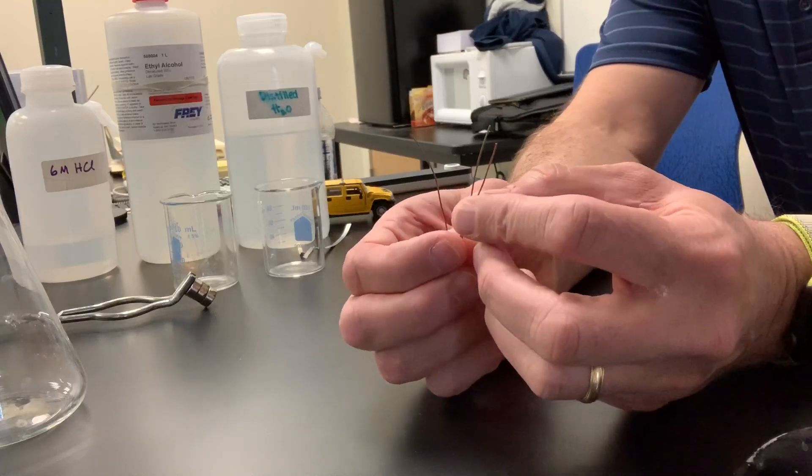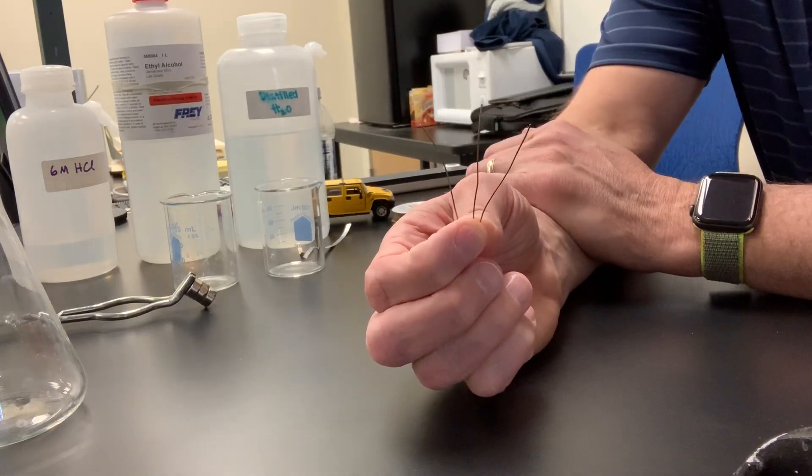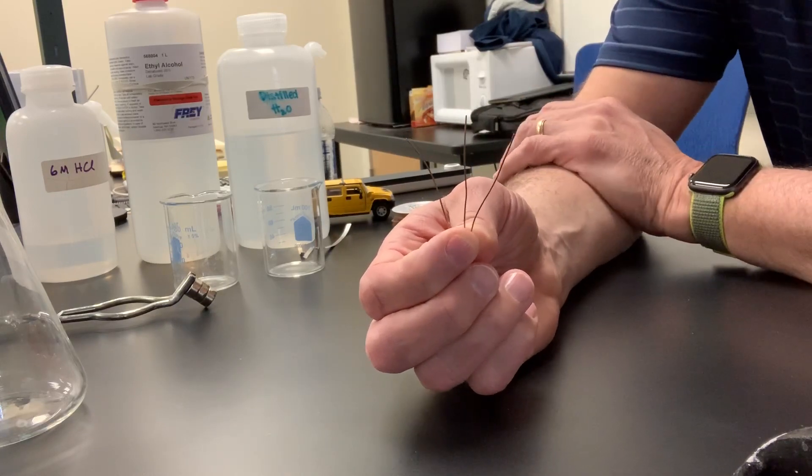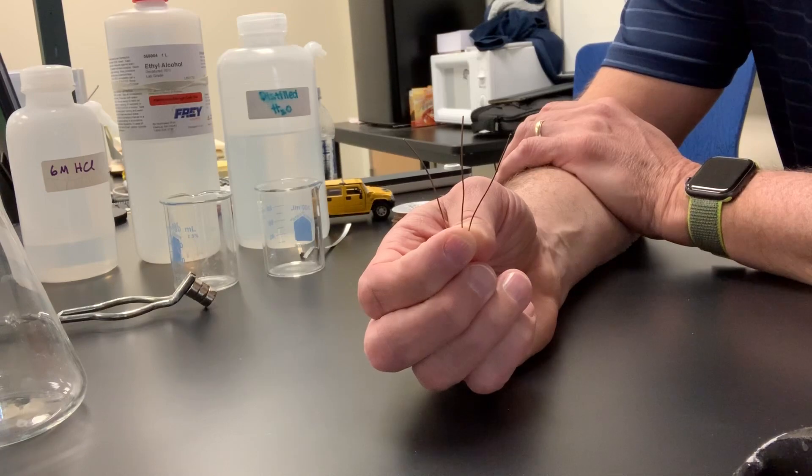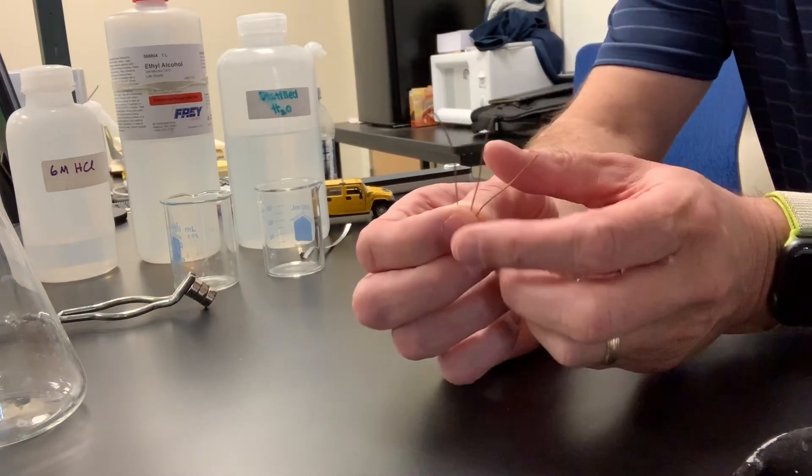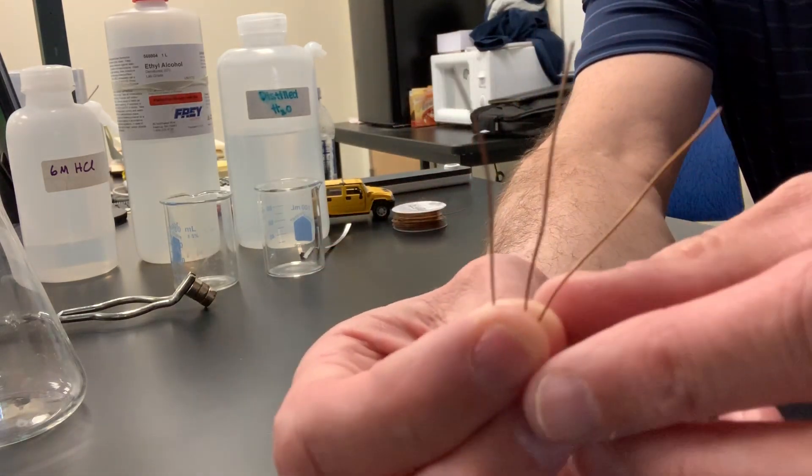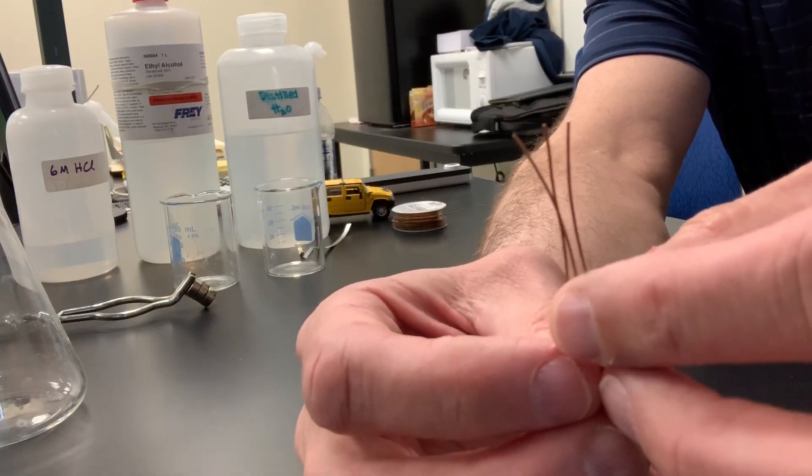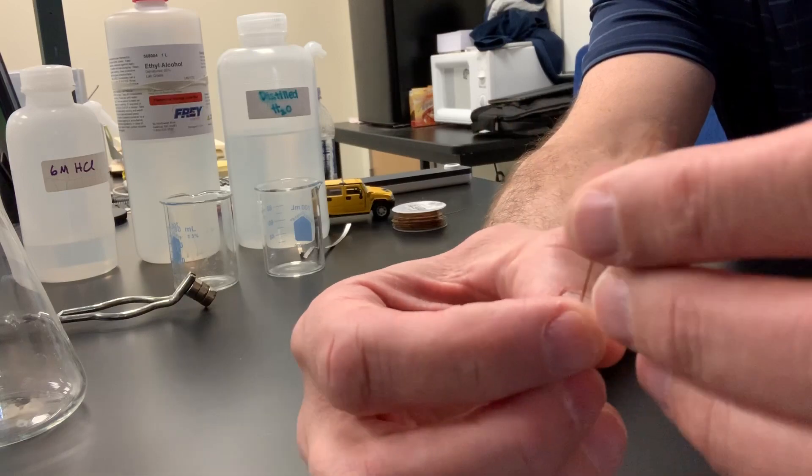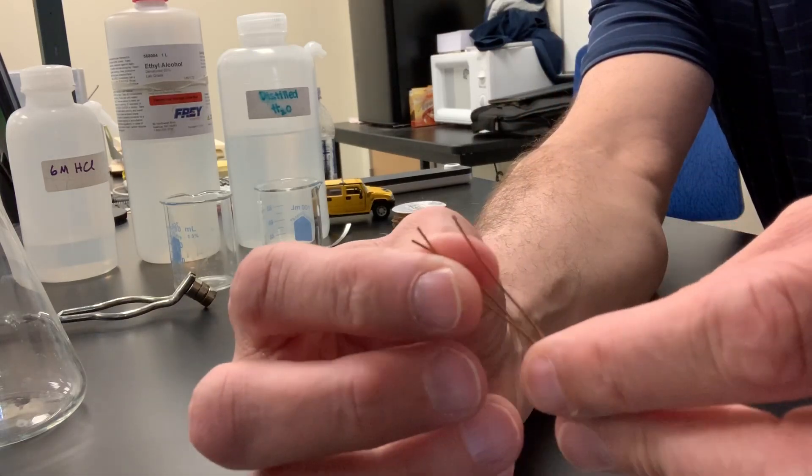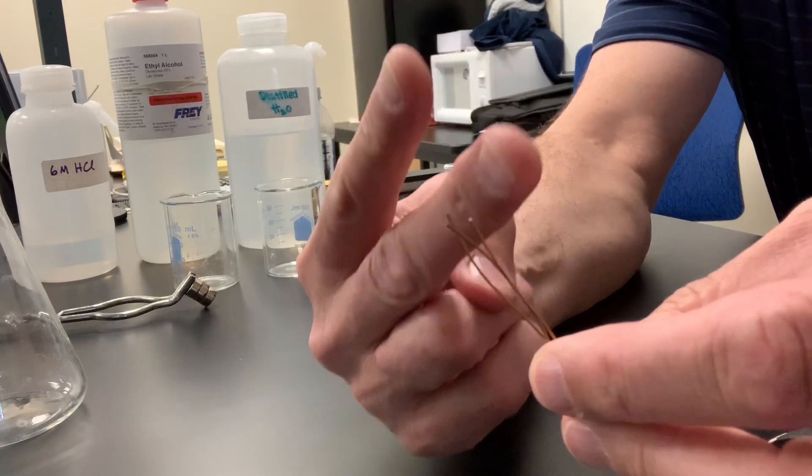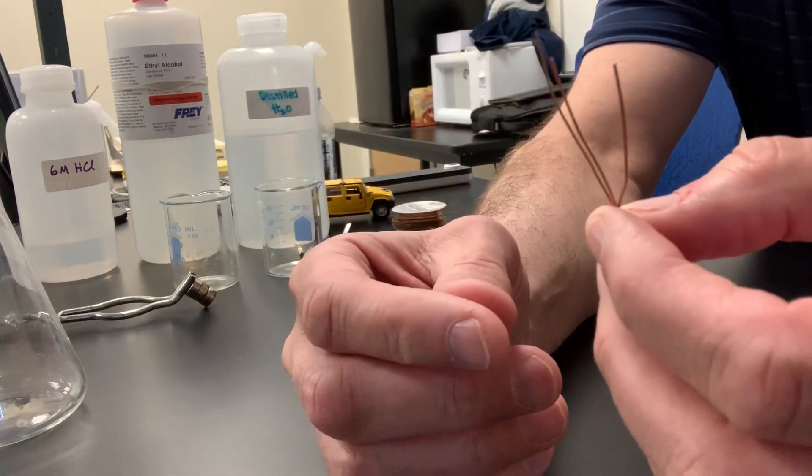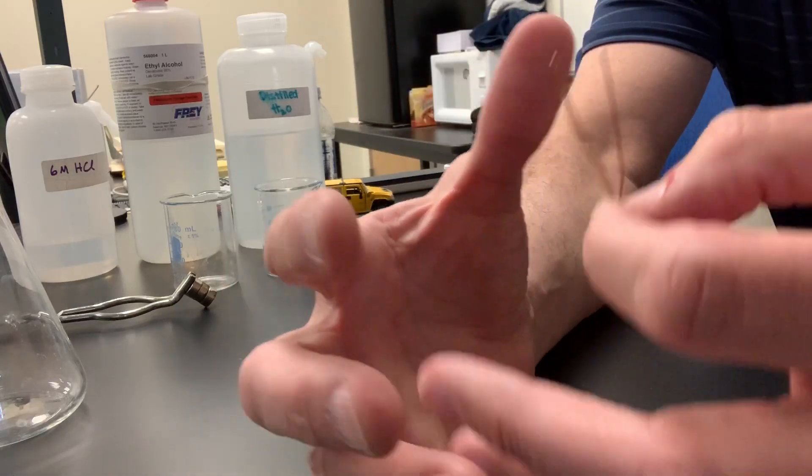So I have some copper wire here. You guys have all seen copper before. Let's start with some simple properties to begin with. Think color and think its state at room temperature. So if you look at the copper, its color would be copper or maybe an orangeish color, and it appears to be a solid. It's not a liquid or a gas at room temperature. Now, aren't those two different things that describe the matter, its color and its state at room temperature? Those are called properties.